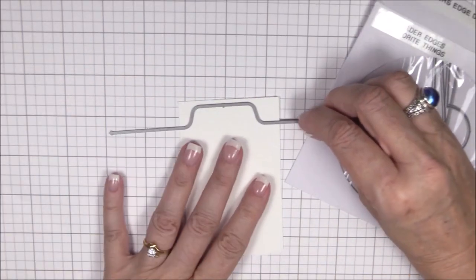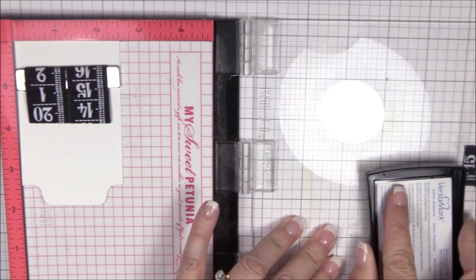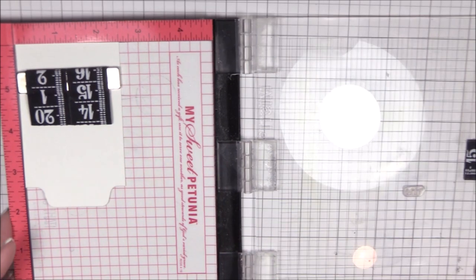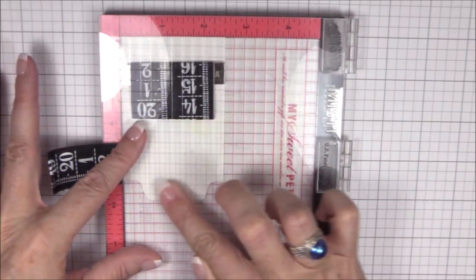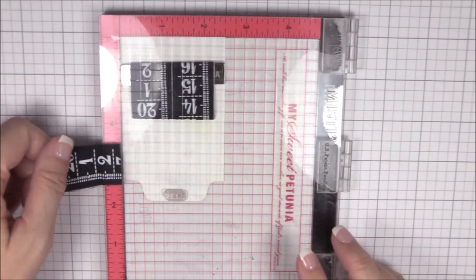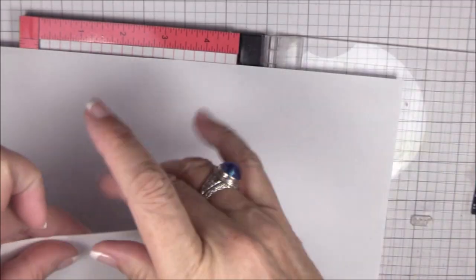To create our slider tab, I've trimmed a 4 inch by 2 and a quarter inch panel from smooth white cardstock, and I'm using the center tab die from the file folder edges die-namics to create our pull tab. I'm stamping the word pull from the interactive label stamp set onto the pull tab using Versamark ink, and then I'm heat embossing it with some pink embossing powder that I had in my stash.